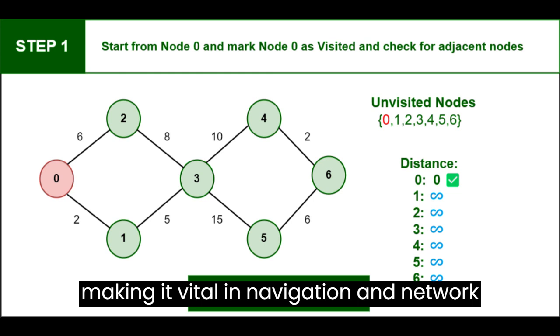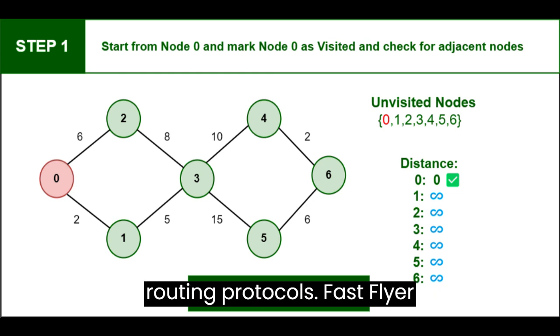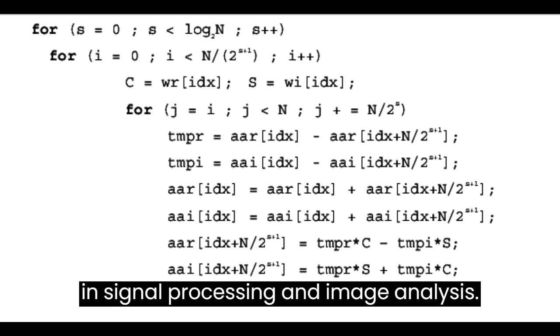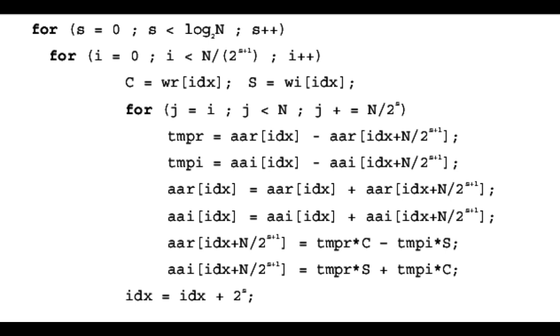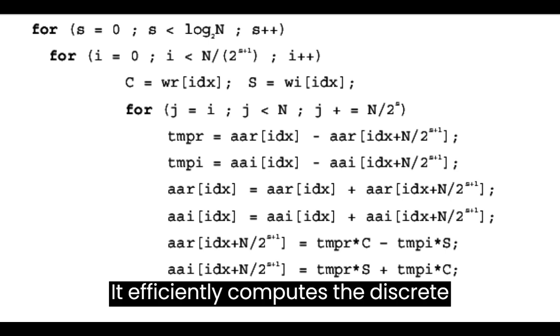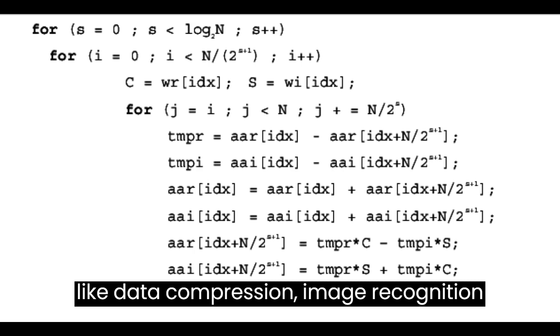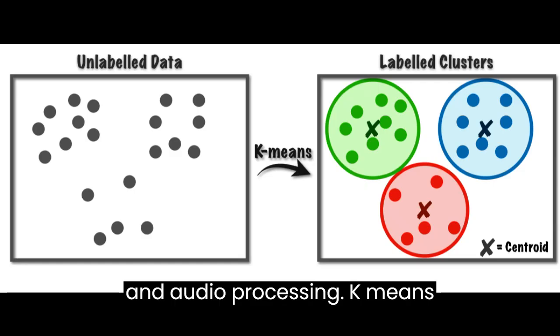Fast Fourier Transform (FFT) is crucial in signal processing and image analysis. It efficiently computes the discrete Fourier Transform, enabling applications like data compression, image recognition, and audio processing.